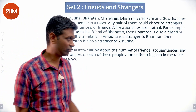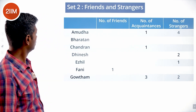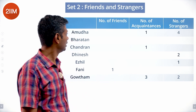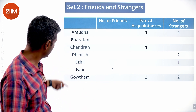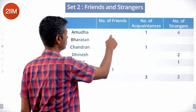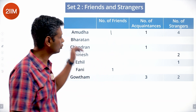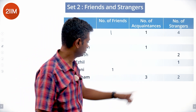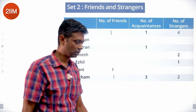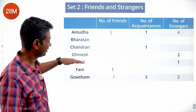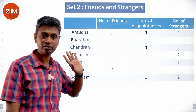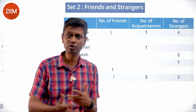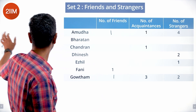Partial information about the number of friends, acquaintances, and strangers of each person is given in the table. Amudha has one acquaintance and four strangers. Since Amudha has relationships with six people, one acquaintance and four strangers means one friend — each row should add up to six. Gautam has three plus two equals five, so that's one. The rest we can't fill yet; there should be more pieces.